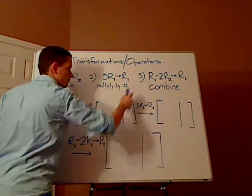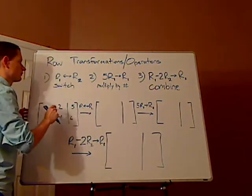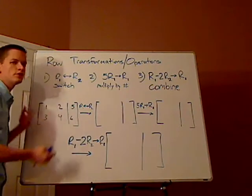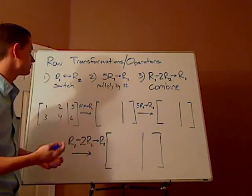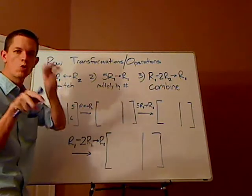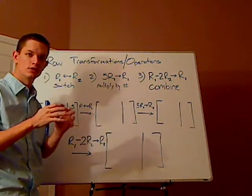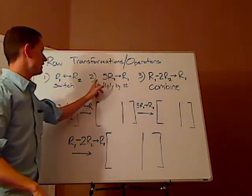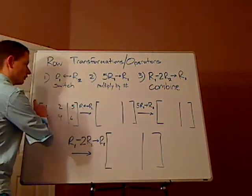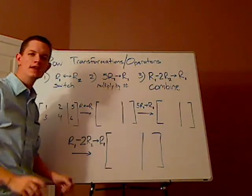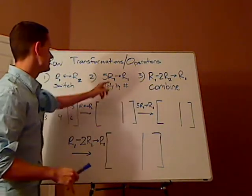You have three basic operators, operations. One is the switch where you simply exchange the rows, you just switch the rows. In the second step, you multiply it by a number. You just take the row, whatever the row is, and you multiply it by that number.